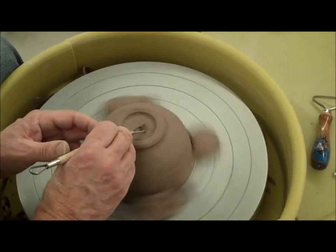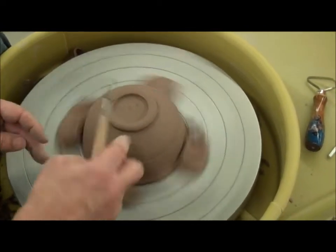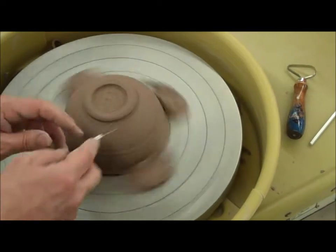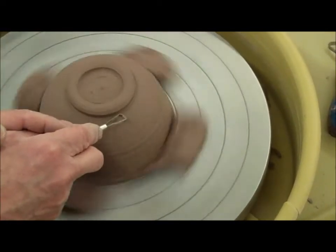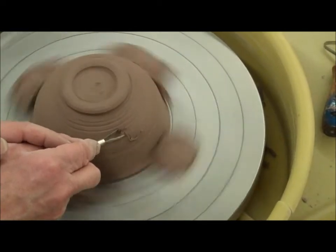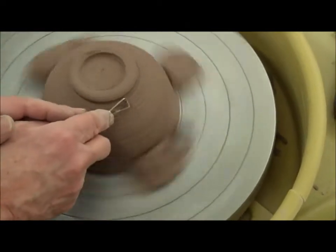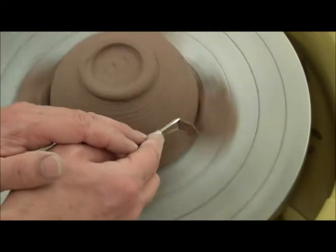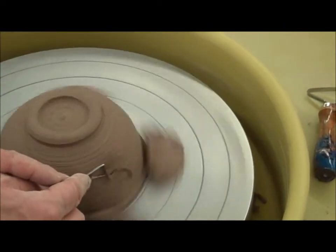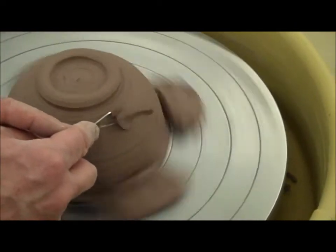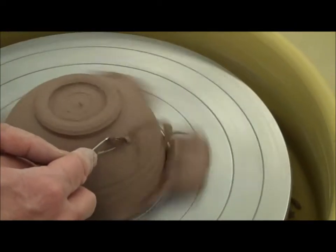I vary the angle of my tool so that I leave a fairly smooth surface. If I hold my tool at one angle like this, I could end up gouging the surface. Instead, I'm going to slightly vary the angle of my tool up and down so that I leave a smooth, even, ungouged surface.